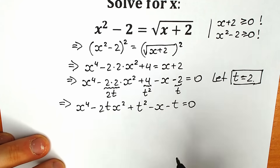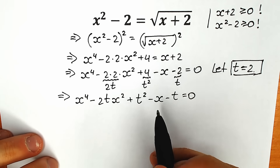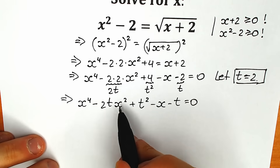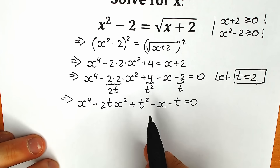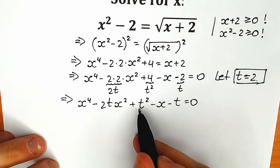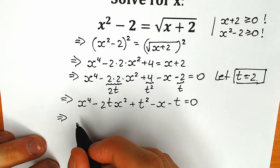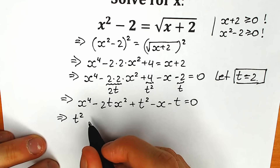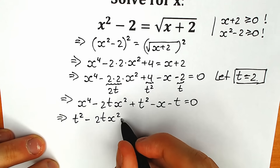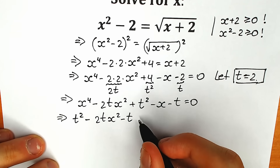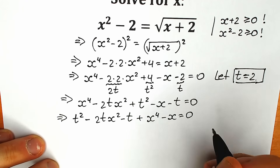A lot of students might think, hey we have a complicated question now because we have both x and t. What do we do next? Let's group the terms. We group the 2t·x² together with the minus t. Then let's reorder: on the first position write t squared, then minus 2t·x² minus t, and in the end plus x to the fourth power minus x, equal to zero.